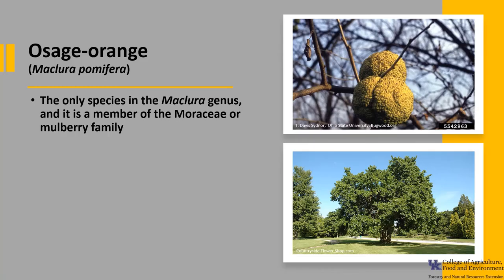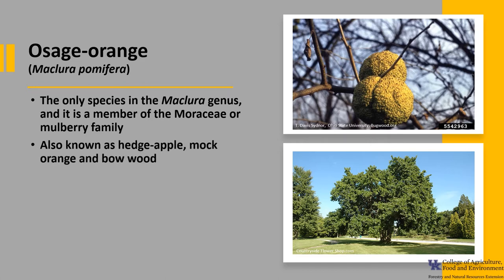Osage Orange is the only species in the Maclura genus and it is a member of the Moraceae, or the mulberry family. It is also known as hedge apple, mock orange, and bow wood.